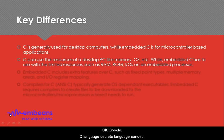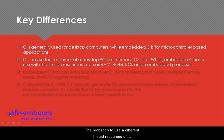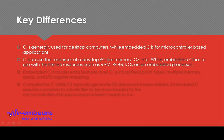C language can use desktop resources like memory and operating system, while embedded C has the provision to use the different limited resources of embedded systems like RAM, ROM, or input/output systems of an embedded processor.